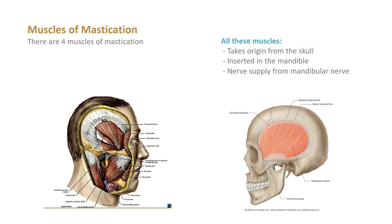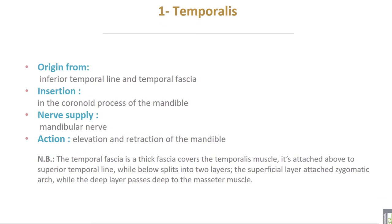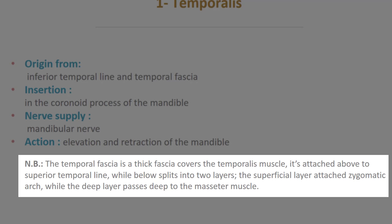The temporalis muscle takes origin from the inferior temporal line and the temporal fascia, and is inserted into the coronoid process of the mandible. Its nerve supply is from the mandibular nerve. The action of the temporalis is elevation and retraction of the mandible.